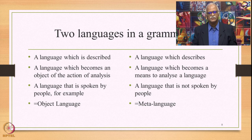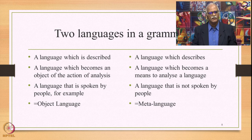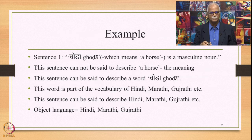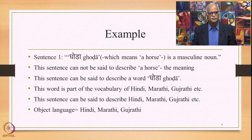Let us take some examples. Let us look at the combinations of object language and meta-language in different kinds of grammar. I would restrict myself to Sanskrit grammar later on, but initially let us look at some examples that will clarify what is an object language and what is a meta-language further.